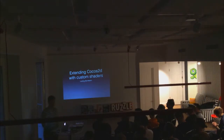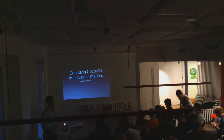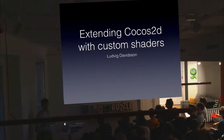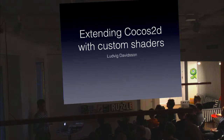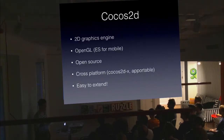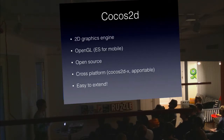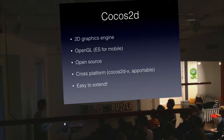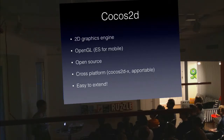Hey everyone, my name is Ludvig and I'm part of the Russell Adventure team. I'm going to talk about how you can customize Cocos 2D with some shaders of your own. For anyone who doesn't know, Cocos 2D is a 2D graphics engine — it's open source, built on top of OpenGL, really easy to use, and cross-platform. Since this is a mobile-focused talk, we're going to be using OpenGL ES.